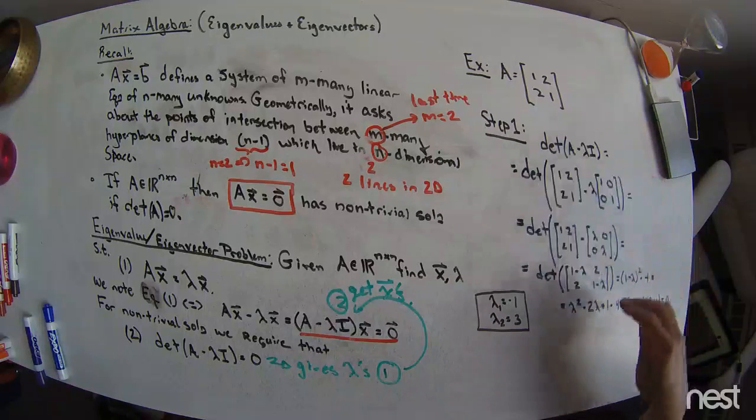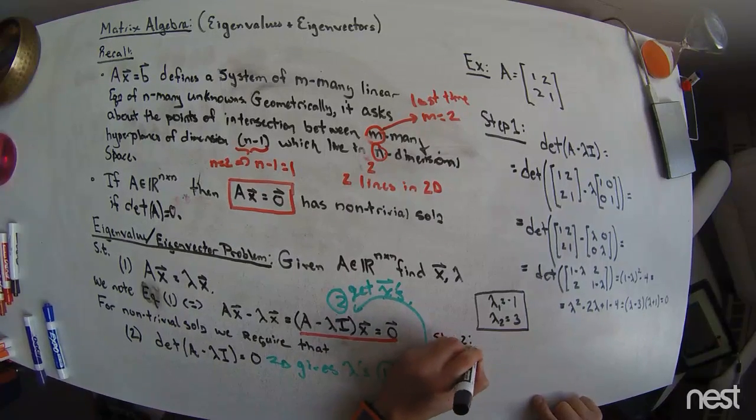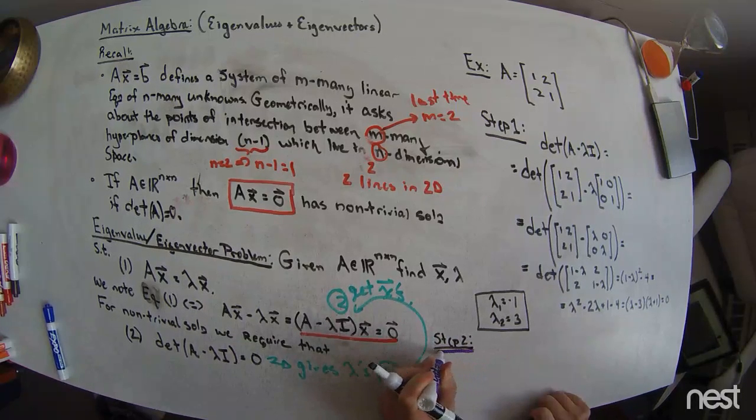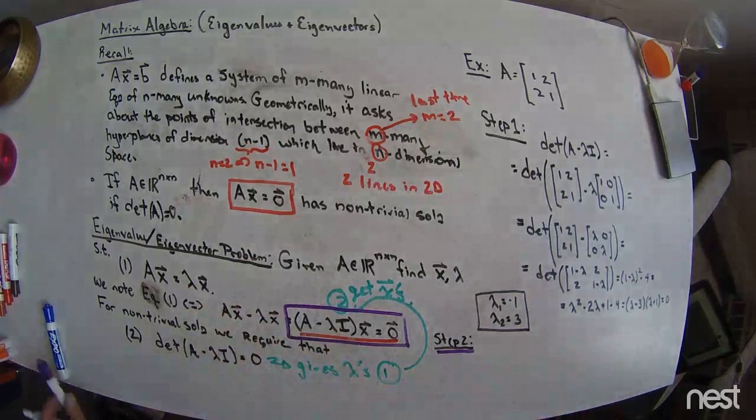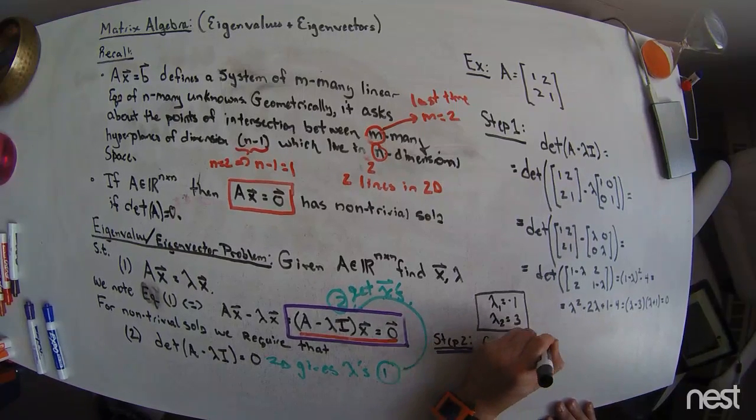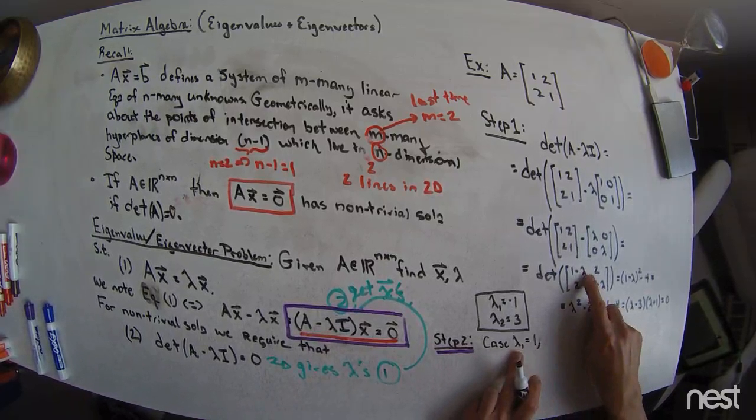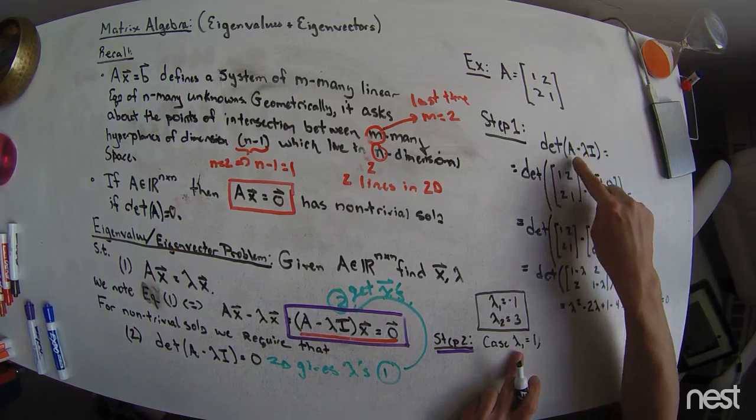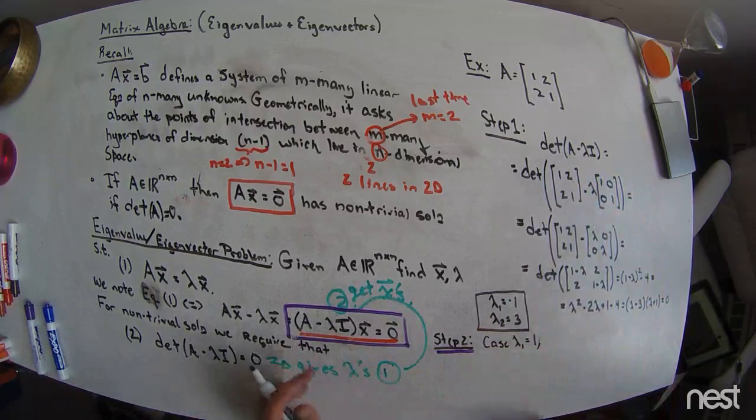Okay. So, that is step 1. I've calculated the eigenvalues associated with this matrix. Step 2 is to calculate the eigenvectors. And so, for the eigenvectors, this is step 2. I've got to work through this equation right here. And so, what am I going to do? I'm going to say there are two cases. The case for lambda 1 is equal to negative 1. And for this case, I'm going to take this lambda 1.